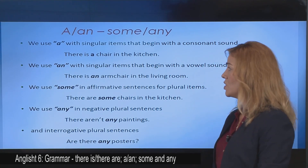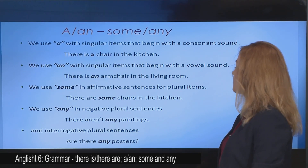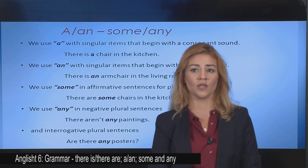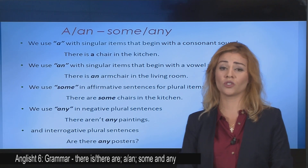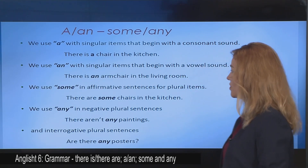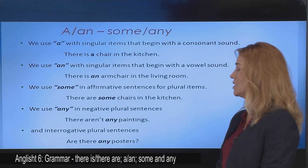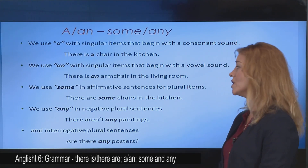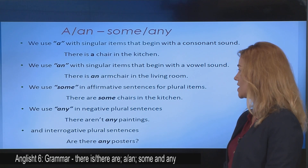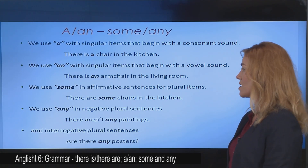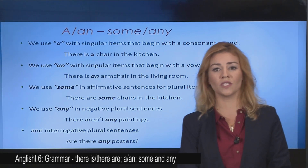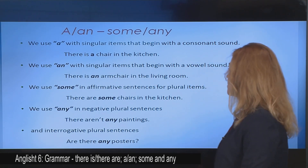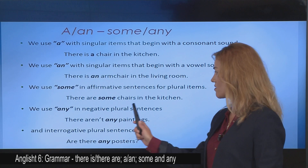When do we use an? We use an with singular items that begin with a vowel sound. There is an armchair in the living room. Po kur përdorim një an? Ne përdorim an me emrat e numrit njëjës që fillojnë me zanore. Si në shembullin e mëposhtëm: ndodhet një kolltuk në dhomën e ndenjjes. So an armchair — we have a vowel sound. When do we use some? We use some in affirmative sentences for plural items. There are some chairs in the kitchen. Pra kur përdorim disa, ose some? E përdorim në fjalitë dëftore me emrat e numrit shumës. There are some chairs in the kitchen.